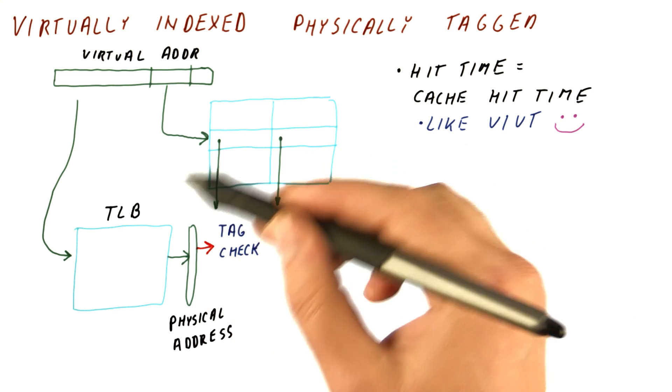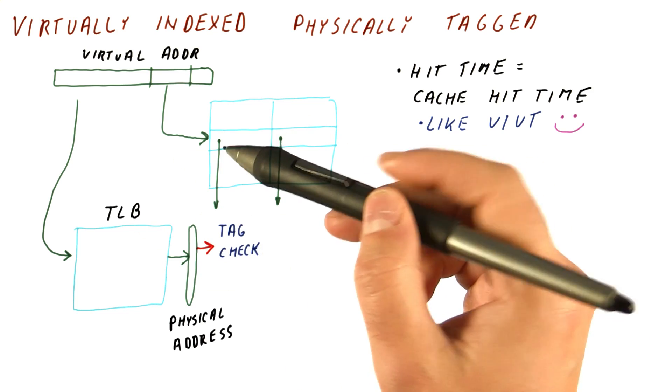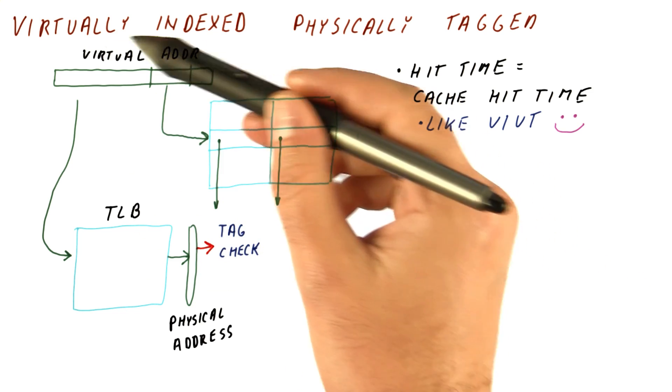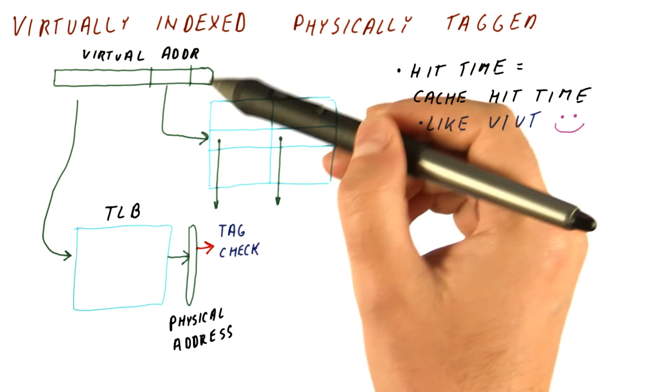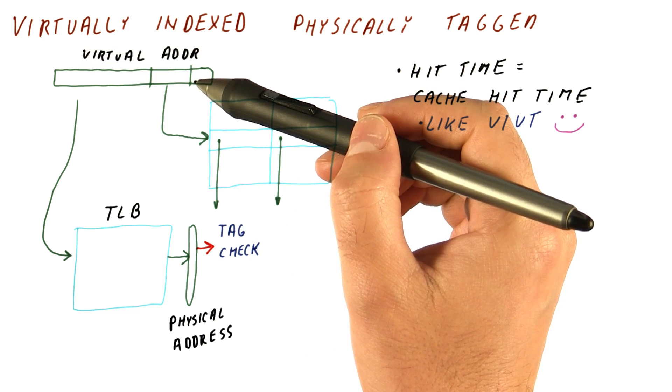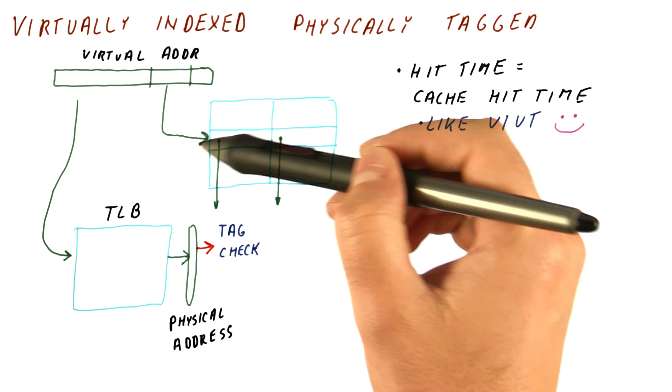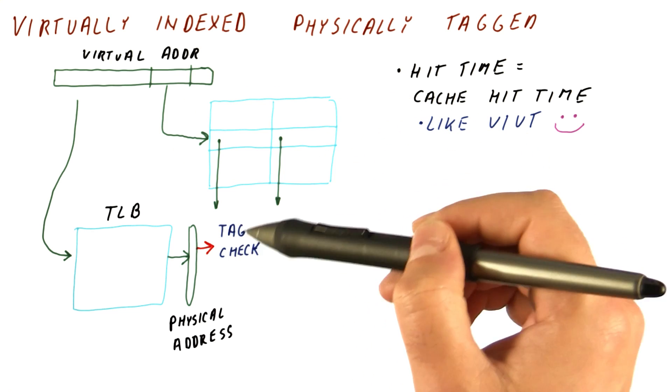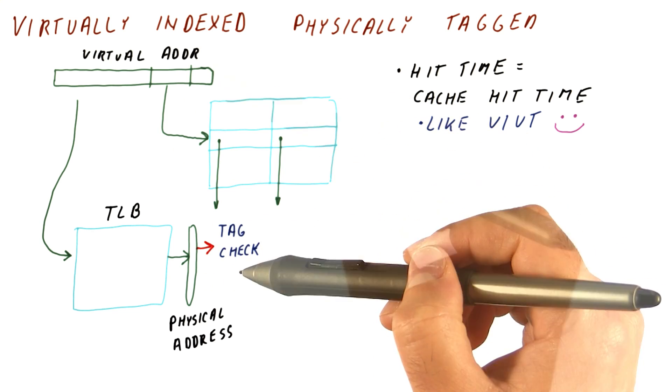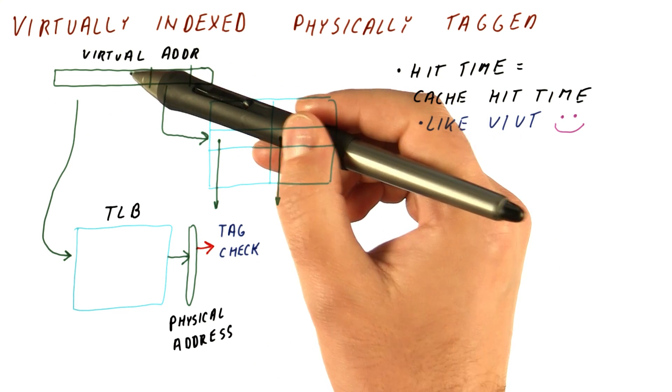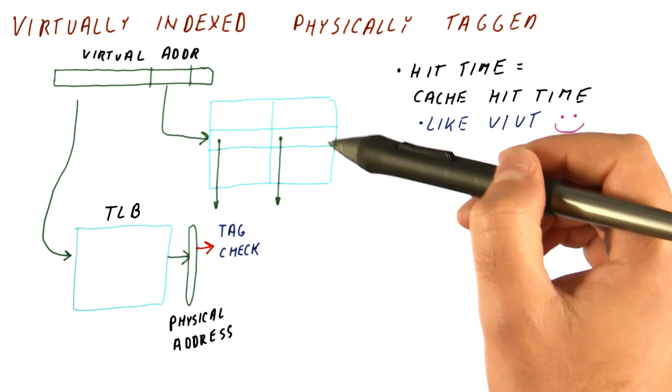Do we need to flush on a context switch? Well, it turns out no, because if we switch the process so that virtual addresses correspond to different physical addresses, what we find in the cache will be checked against the actual physical address.